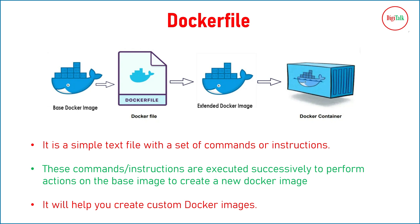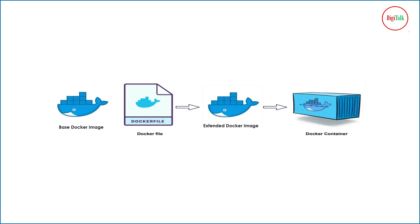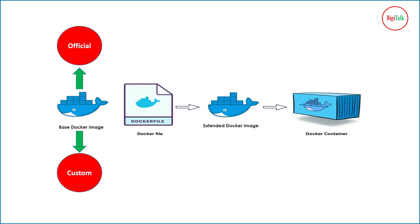So with the help of a Dockerfile we are creating our extended Docker image. We have a base Docker image, use the Dockerfile to create the extended image, and then run the Docker containers. When we talk about Docker images there are official images — pre-built images from organizations. As of today almost all organizations provide their software in containers. With official images you can create an extended image using Dockerfiles, or you can create your own custom images and run containers from those.